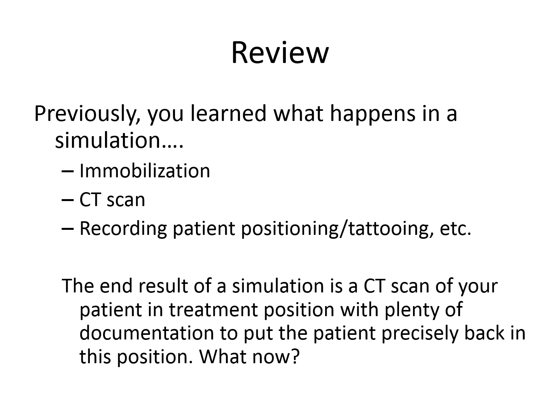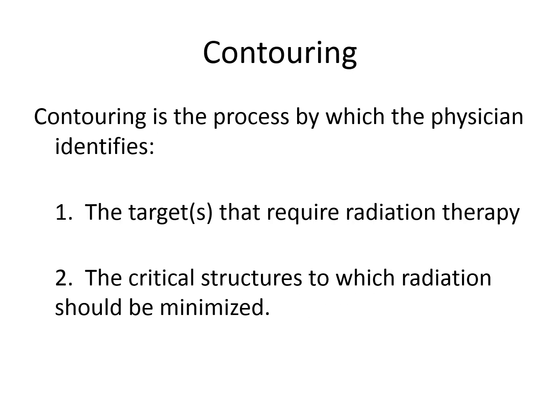Previously, in the first two IROC lectures, you've seen the process that patients move through as they are treated with radiation, including what happens during simulation — the immobilization of the patient, a CAT scan, and recording patient positioning using tattoos. The end result is a CAT scan of your patient in treatment position. The next step in the process is contouring, by which physicians identify targets requiring radiation therapy and critical structures where radiation should be minimized.